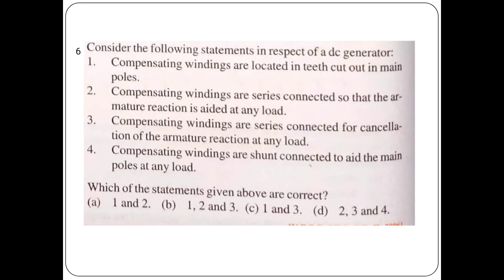Consider the following statements in respect of a DC generator. Compensating windings are located in slots cut out in main poles. Compensating windings are series connected so that the armature reaction is added at any load. Compensating windings are series connected for cancellation of the armature reaction at any load. Compensating windings are shunt connected to aid the main poles at any load. The correct answer is option C — statements 1 and 3 are correct: compensating windings are located in slots cut out in main poles and are series connected for cancellation of the armature reaction at any load.